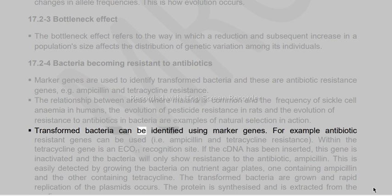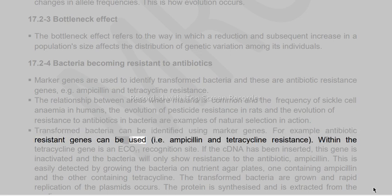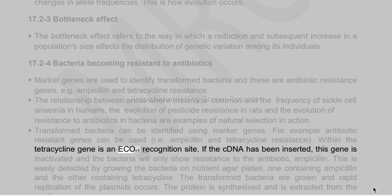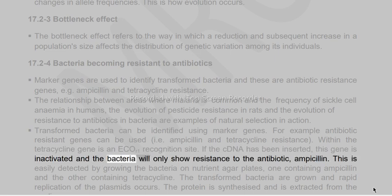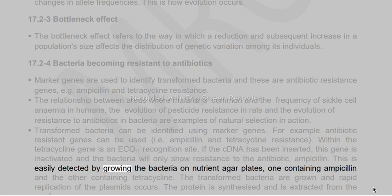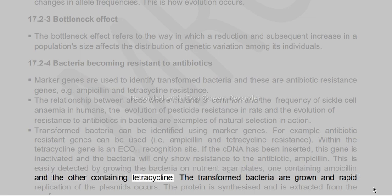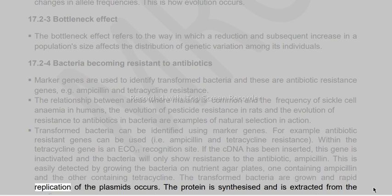Transformed bacteria can be identified using marker genes such as antibiotic-resistant genes, i.e. ampicillin and tetracycline resistance. Within the tetracycline gene is an ECOR1 recognition site. If the cDNA has been inserted, this gene is inactivated and the bacteria will only show resistance to ampicillin. This is detected by growing bacteria on nutrient agar plates, one containing ampicillin and the other containing tetracycline. The transformed bacteria are grown and rapid replication of the plasmids occurs, and the protein is synthesized and extracted from the medium.